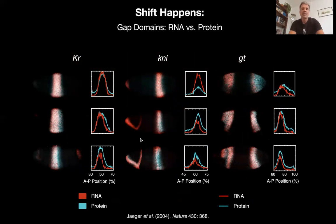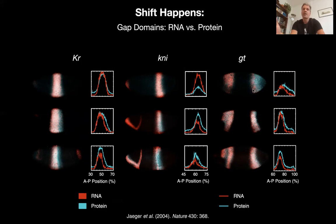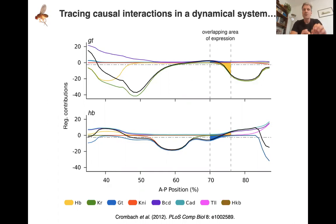We actually showed it works in simulations where you switch diffusion off completely. We tested this by comparing RNA and protein, and found that for all of these different genes the RNA domain was lagging behind the protein domain — most clearly visible for giant, where the RNA expression pattern represents the region of active production and you can see it's only in the anterior of the domain. So there is an area where protein is still present but production has already ceased, which is why the domain moves.